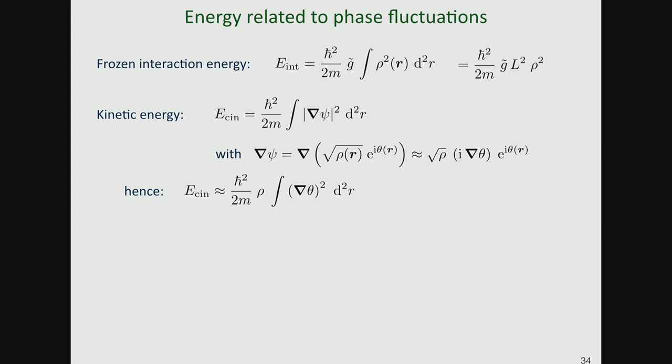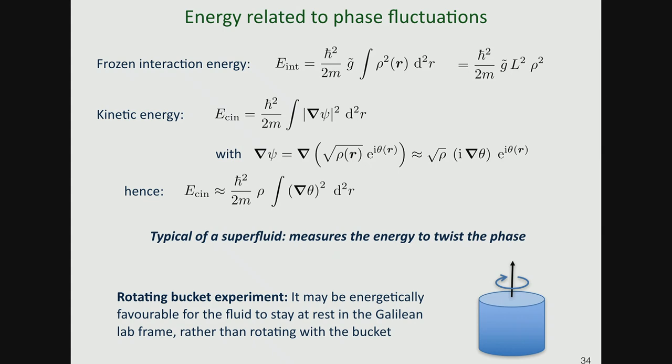This type of energy — depending only on the gradient of the phase — is typical of a superfluid. The relevant energy in this system is the energy needed to twist the phase. At zero temperature the phase is uniform, and the relevant excitations are those that try to twist the phase. When such an energy functional governs the system, it corresponds to a superfluid system.